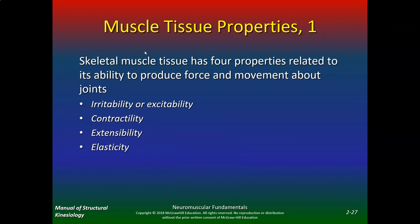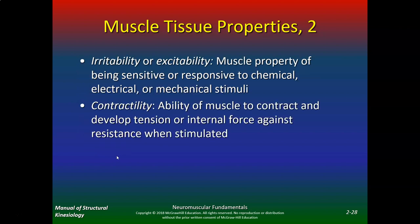Now let's talk about muscle tissue properties. Skeletal muscle tissues have four properties related to their ability to produce force and movement about joints: irritability/excitability, contractility, extensibility, and elasticity. Irritability or excitability is the muscle property of being sensitive or responsive to chemical, electrical, and mechanical stimuli. Can that muscle contract — is it irritable, is it excitable?